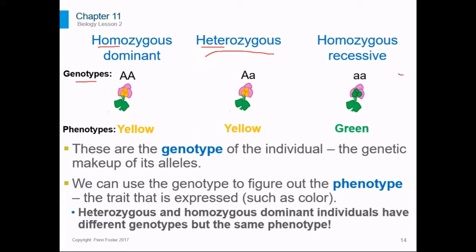For our examples, our homozygous dominant has two yellow alleles and our heterozygous has one yellow and one green, but they have the same phenotype. They're both yellow, because they both have that dominant yellow allele. So the homozygous dominant has no choice but to be yellow with two yellow alleles, but the heterozygous has one yellow which is dominant over the green, so all you see is yellow.